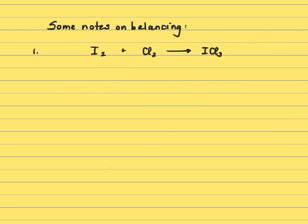So a few notes on balancing. For instance, if I have I2 plus Cl2 gives you ICl3, take a minute and see if you can balance it. And then we can do it together. So I've got two Cl's and three I's. So I'm going to put a two here and a three here and I've actually balanced it.